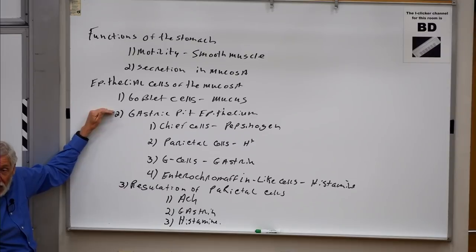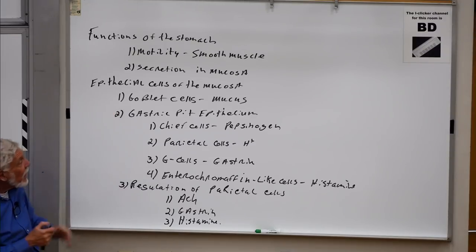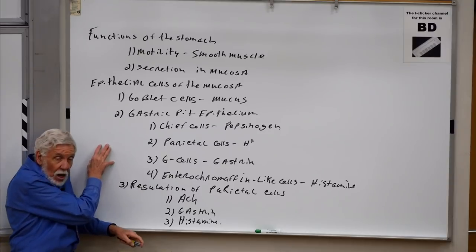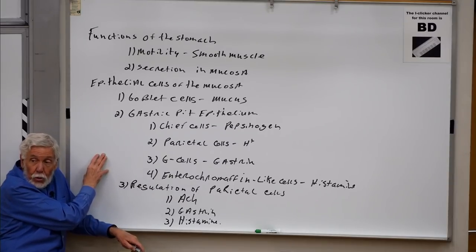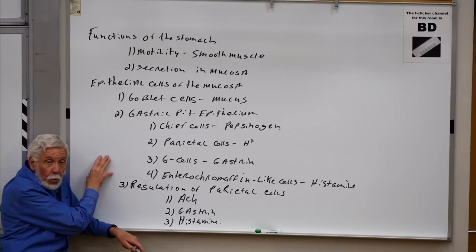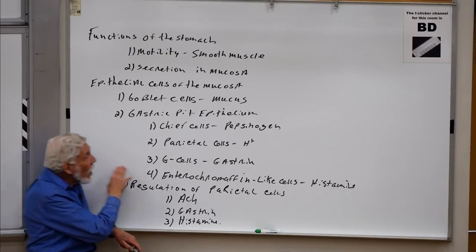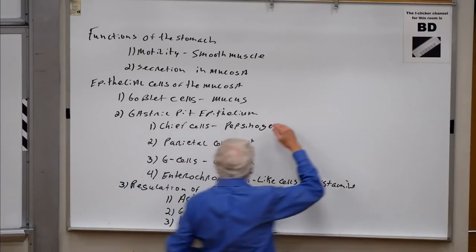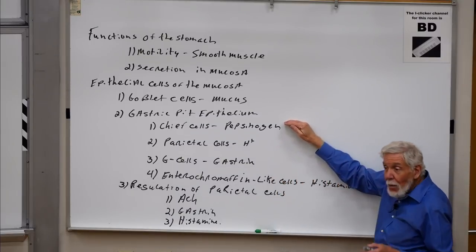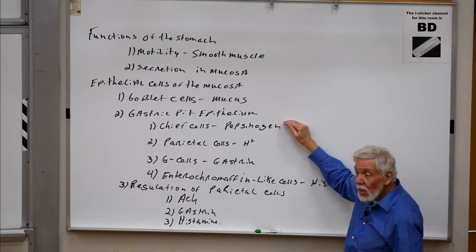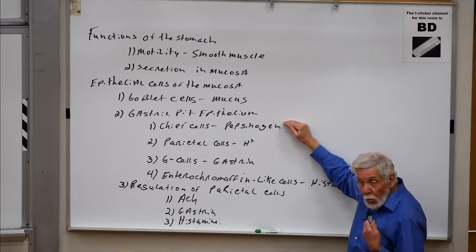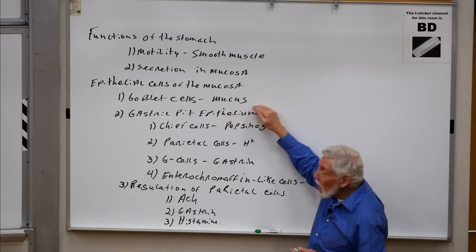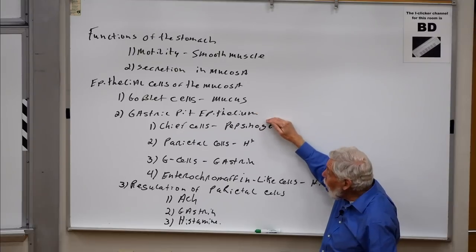This mucus layer becomes a protective layer because the contents of the stomach are remarkably corrosive. The stomach has a pH down around 2 and is full of proteolytic enzymes, so the contents of the stomach are capable of literally digesting the epithelial cells of the mucosa.